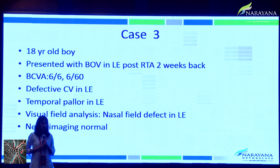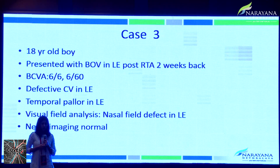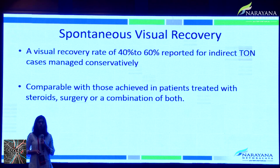Moving on to our third case — an 18-year-old boy presenting with blurring of vision in the left eye two weeks post road traffic accident. He had a vision of 6/60, defective color vision, RAPD in the left eye, and early temporal pallor with nasal field defect on visual field analysis. Neuroimaging was normal. We discussed the pros and cons of management and treated him conservatively; at 6-week follow-up his vision improved to 6/24. This was supported by the International Optic Nerve Trauma Study, which reports a visual recovery rate of 40–60% in indirect traumatic optic neuropathy managed conservatively — comparable to outcomes with steroids, surgery, or a combination of both.